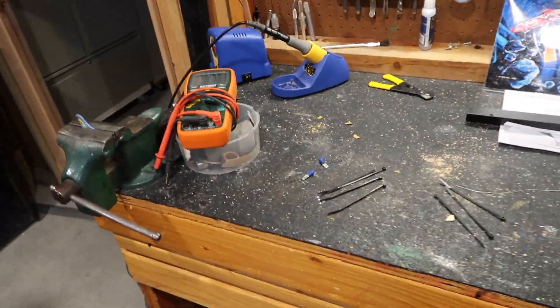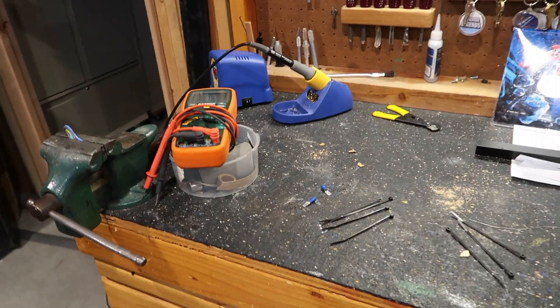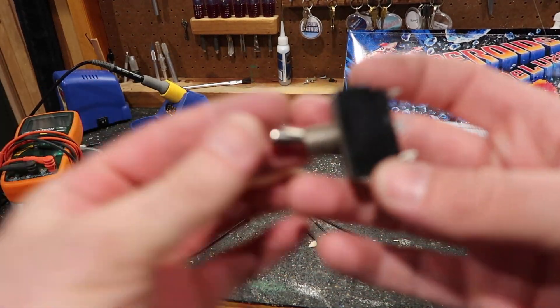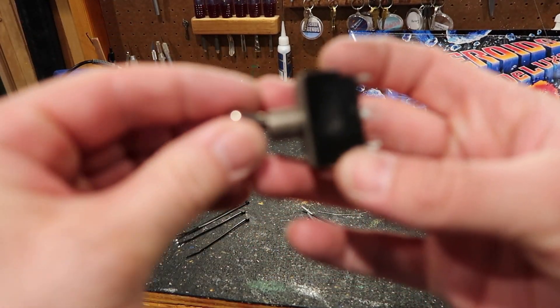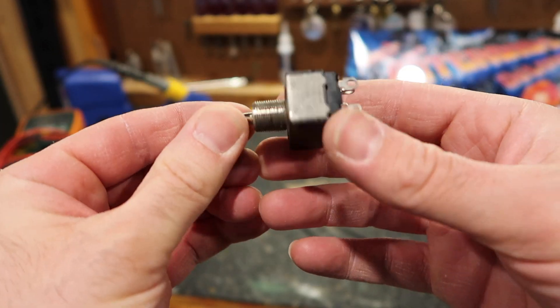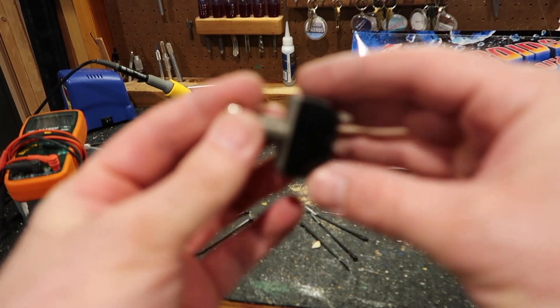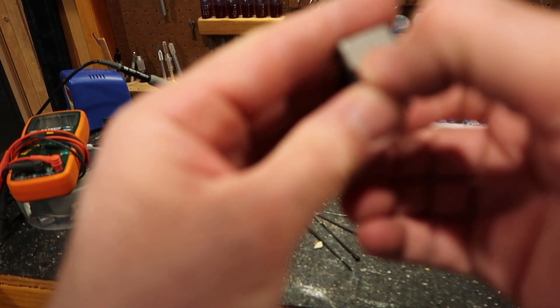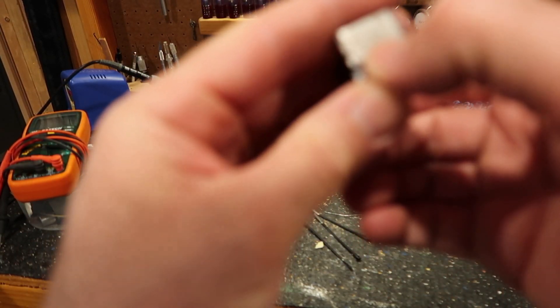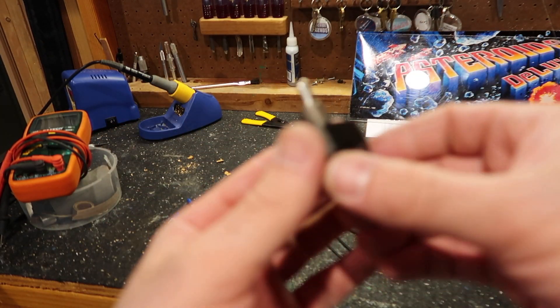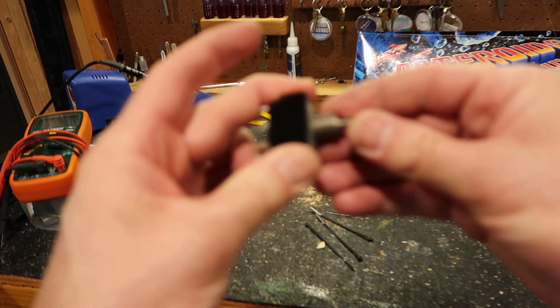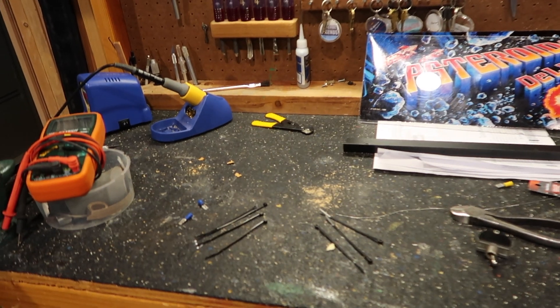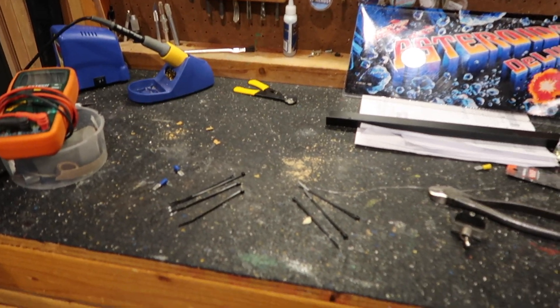So currently I am wiring the switch. I have just a toggle switch here that we're going to use. And this is 10 amps, let's see, ratings here, 10 amps at 250 volts or 15 amps at 125 volts. So this is way overkill for what we need. I think this game only draws 2 amps at most.